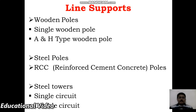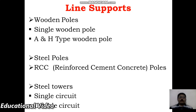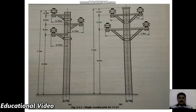The different types of line supports are wooden poles, which are of two types — single wooden pole and H-type wooden pole — steel poles, RCC (Reinforced Cement Concrete) poles, and steel towers, which are again of two types: single circuit and double circuit. We'll now see the diagram of the single wooden pole.